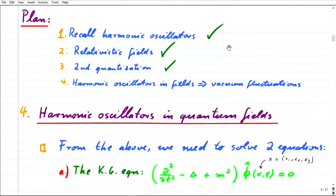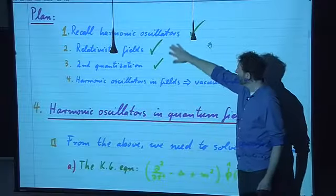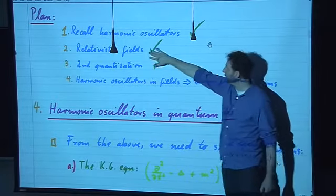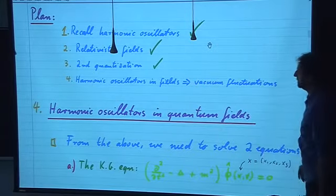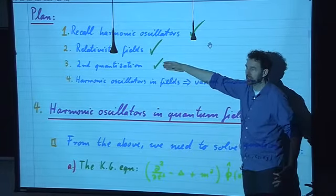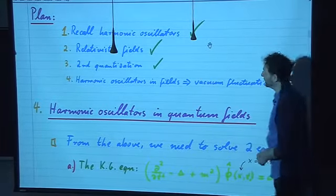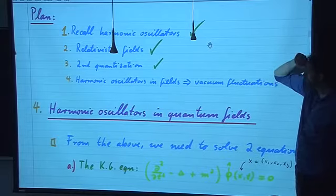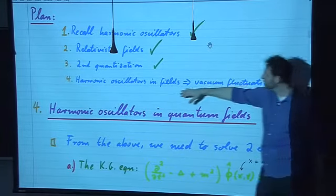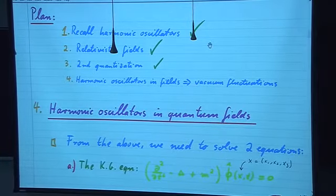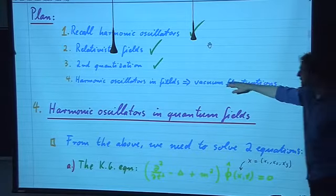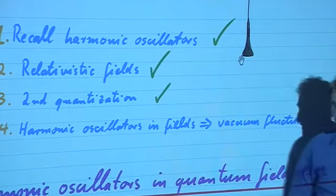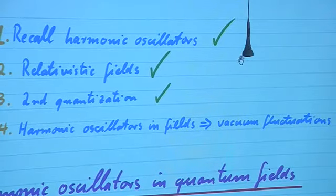Our plan was to proceed in four steps. We've covered the first three: recalling properties of harmonic oscillators, then going to the Klein-Gordon field and second quantizing it by imposing equations of motion, Hermiticity, and commutation relations. Now let's do it in practice and solve that problem. Once we do this, we should be able to calculate vacuum fluctuations, which will be very similar to the ground state fluctuations of harmonic oscillators.